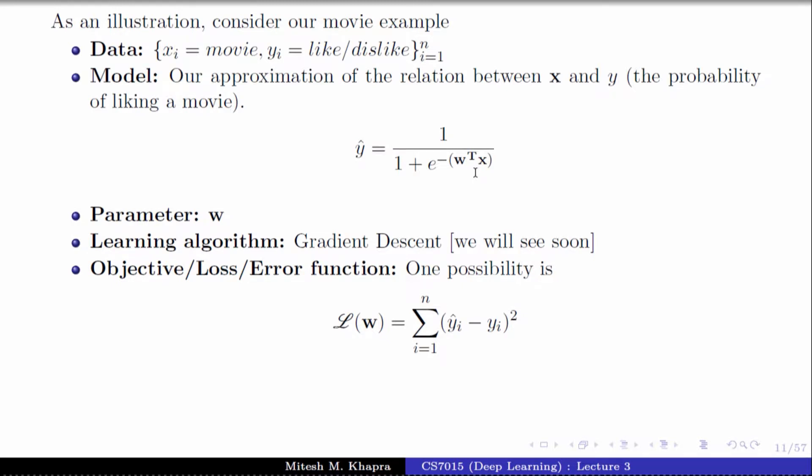So now let's understand which parts we are clear with and which part remains. I've told you the data, the model, the parameters, and the loss function. What I have not told you is the learning algorithm - how to learn these parameters. That's the one we need to cover. We are going to learn something known as gradient descent, which is used for learning these parameters.